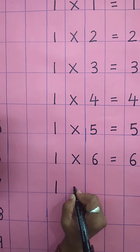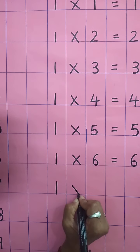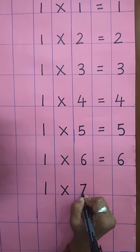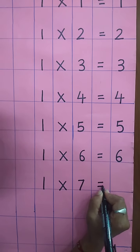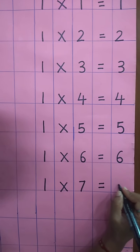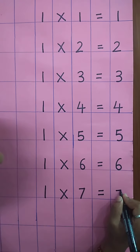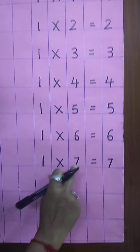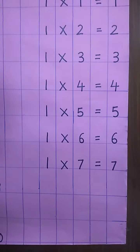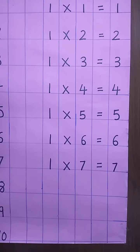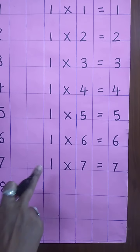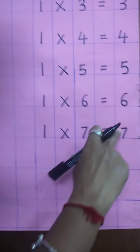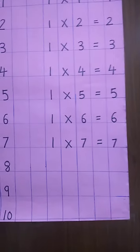Write down one. Multiplying sign. Write here seven. Equal sign. And again, write here seven. One seven's are seven. Aapko touch karke likhna hai. One seven's are seven.